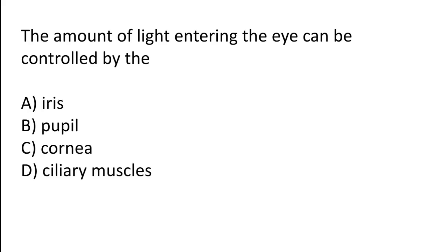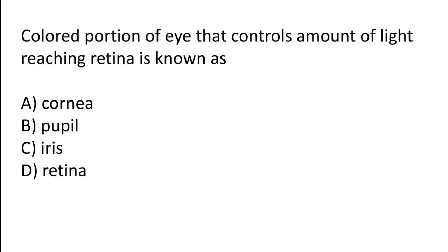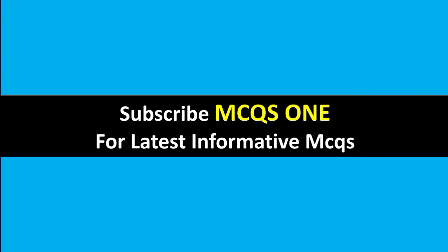The amount of light entering the eye can be controlled by: iris, pupil, cornea, or ciliary muscle. The correct answer is option B — the amount of light entering the eye can be controlled by the pupil. The color portion of the eye that controls the amount of light reaching the retina is known as the iris. The correct answer is option C. Thanks for watching — subscribe to MCQs One for latest informative MCQs.